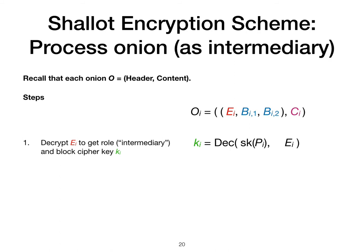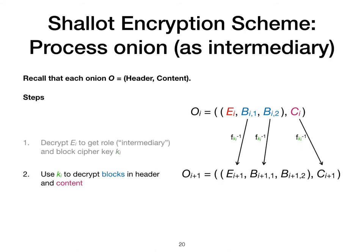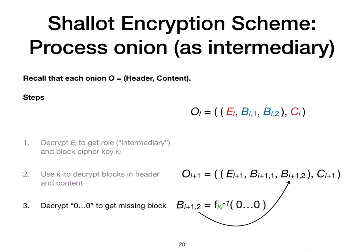Recall that each onion is a pair consisting of the header and the content. We now describe the steps for processing an onion OI, which consists of the header (EI, BI1, BI2) and the content CI, when the processing party is an intermediary. First, decrypt the first block of the header EI to get the role and the block cipher key KI. Then use KI to decrypt the other blocks of the header and the content. Finally, to make the last block of the processed header, decrypt the all-zeros string.